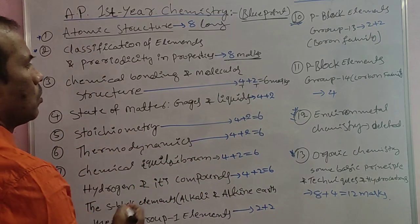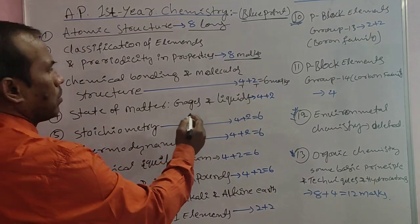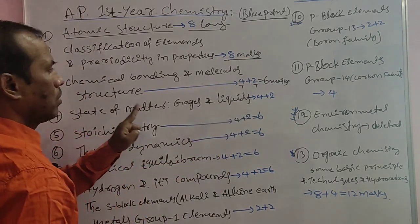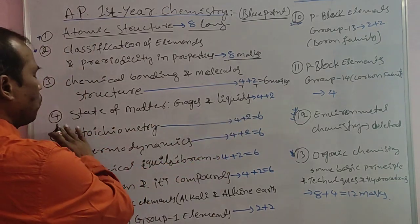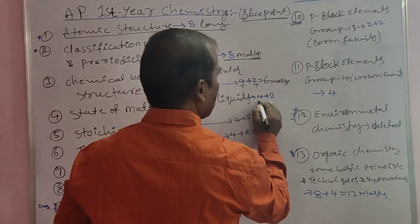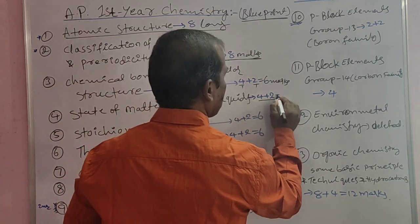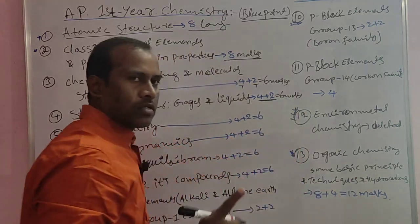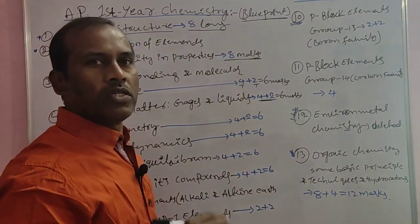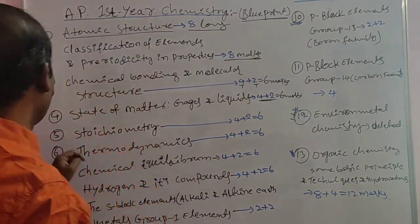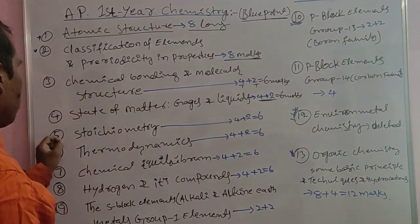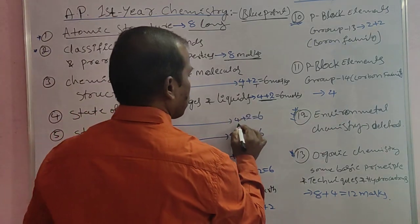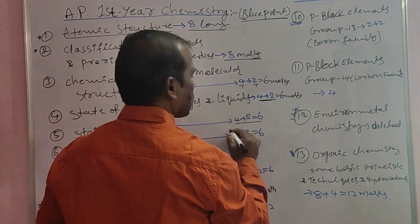The fourth topic is States of Matter — Gases and Liquids. This topic also carries 6 marks. It includes one short answer and one very short answer, making the total 6 marks for this topic.